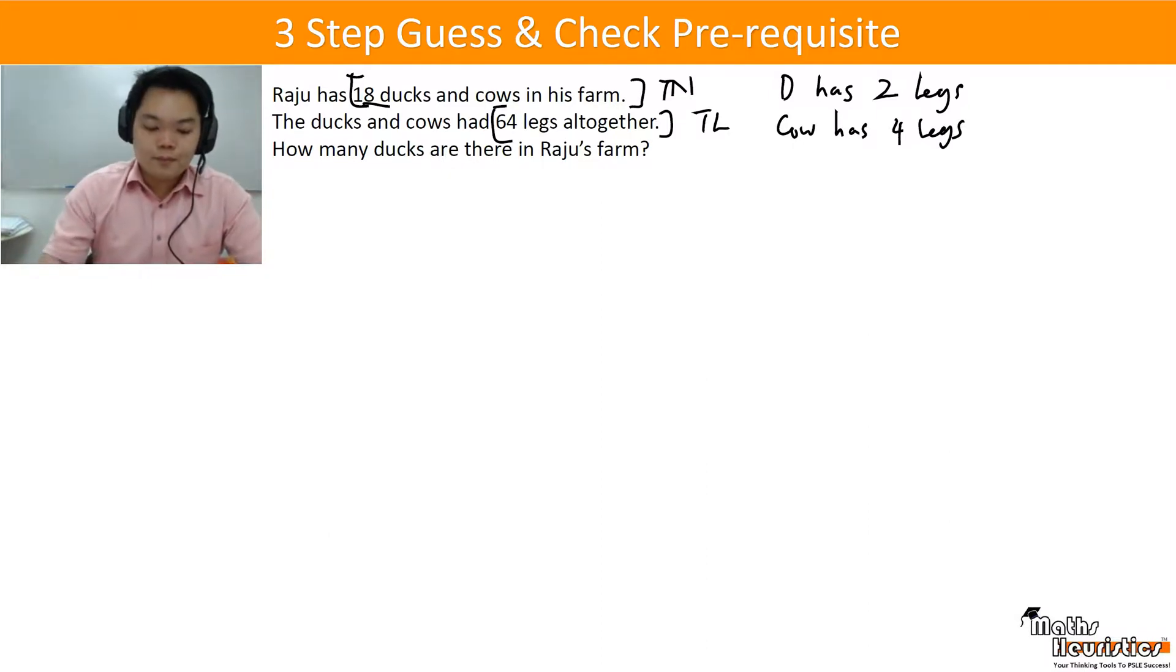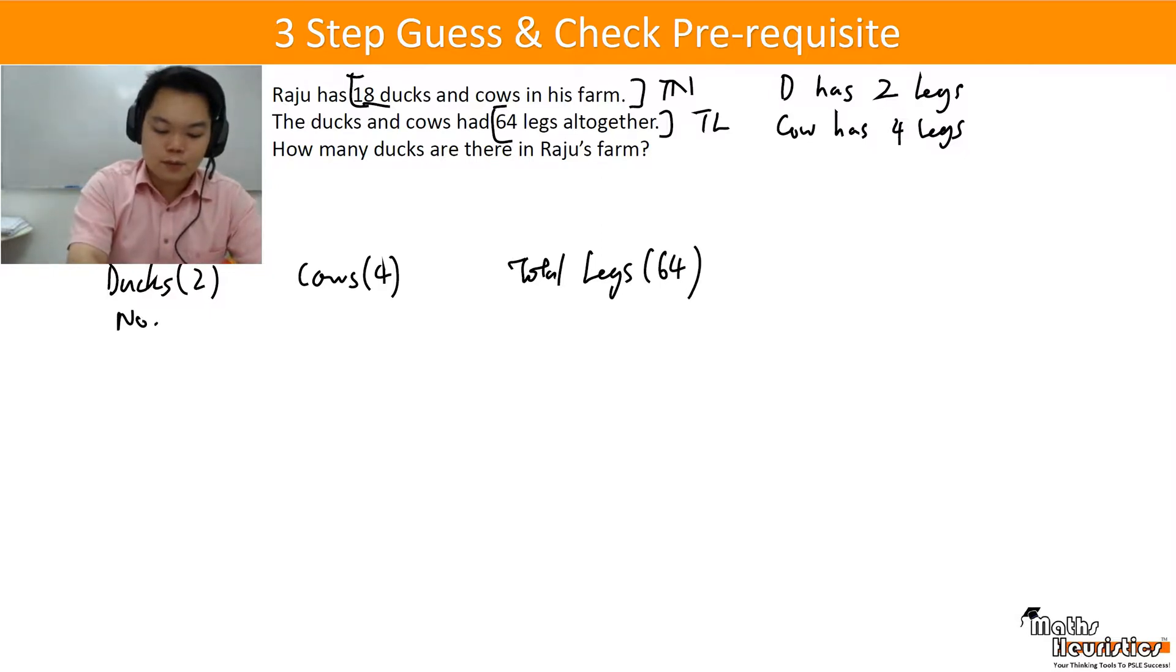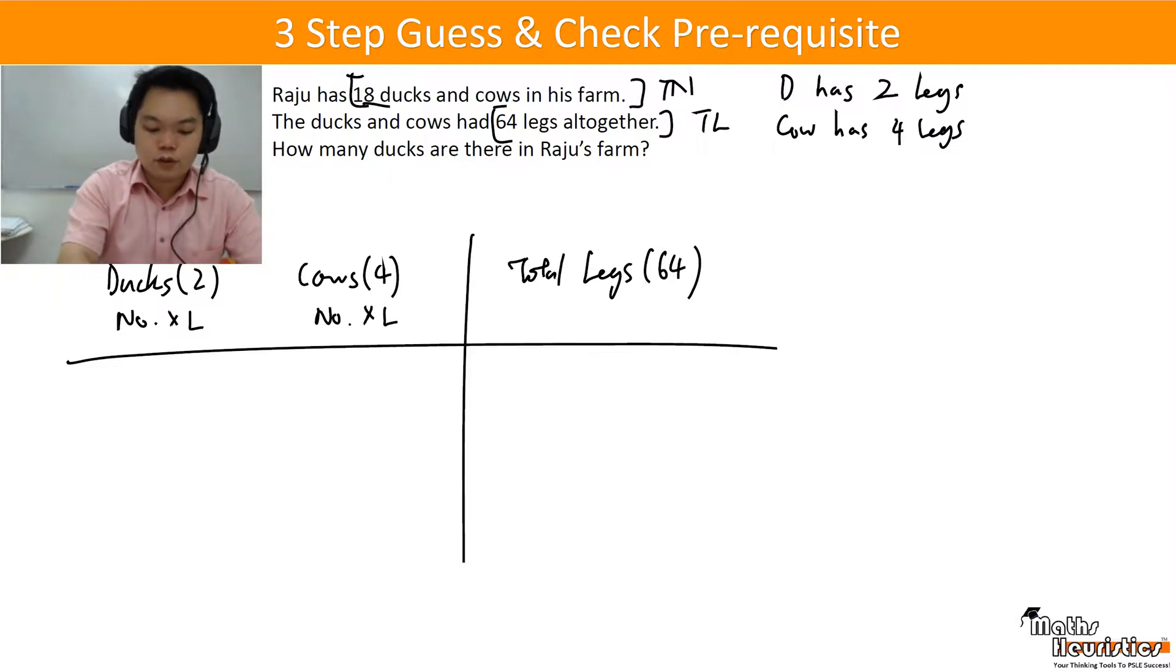So once we got that, let's draw the table. Ducks have 2, cows have 4, and the total legs is 64. So you have your number of ducks times the legs, number of cows times the legs, giving you the total legs.